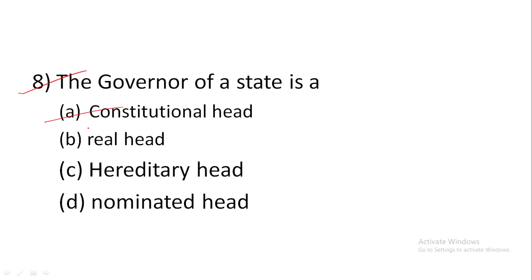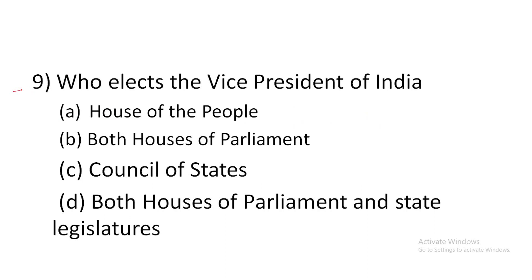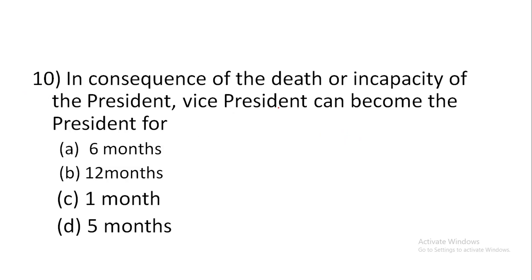Question 8: The Governor of a state is — answer is A, a constitutional head. The President is the union constitutional head and the Governor is the state head. Question 9: Who elects the Vice President of India? Answer is B, both houses of Parliament — Lok Sabha and Rajya Sabha.